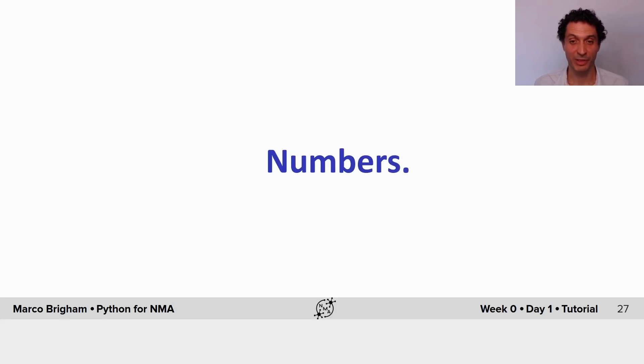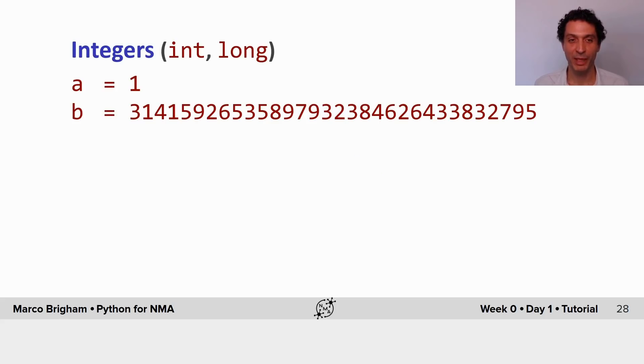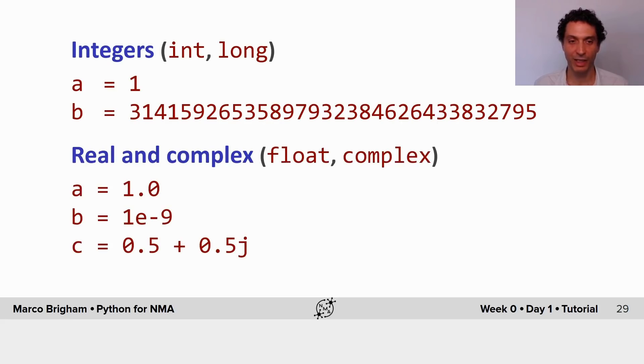Let's start about numbers. Now, numbers in Python, they come as integers that have the types int and long. We have two examples here with the one with a very long number is the type long. The first one is type int. You have real and complex numbers represented by the types float and complex. The first example is the real number 1. The second example is a very small number that is represented in exponential notation. And the third example, c, is a complex number.